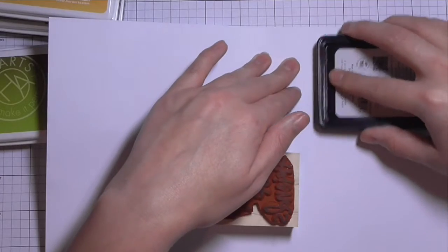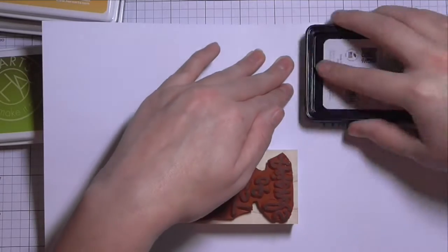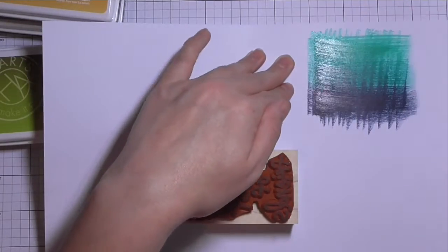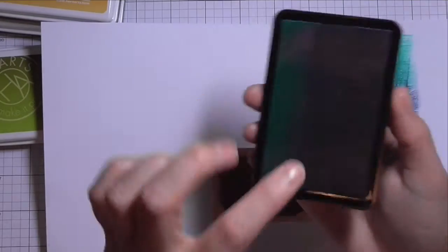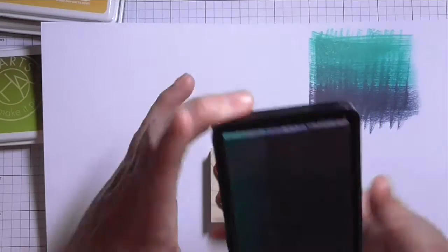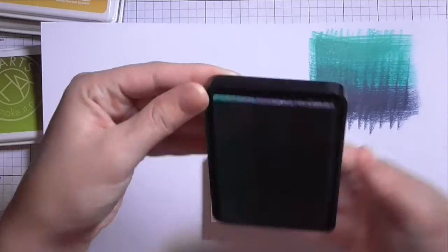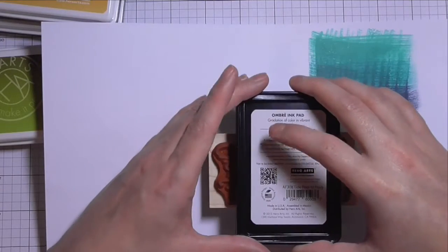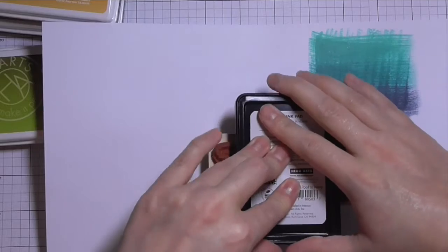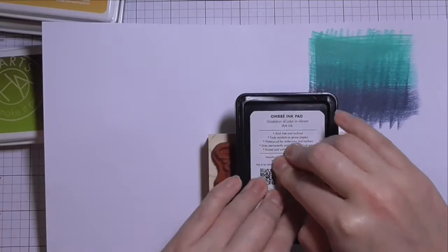So I've got these Ombre ink pads and I'm starting off with one of the blue ink pads. And I'm just swiping that down onto a piece of paper so I can see which of the felt pads is the darkest and which one's the lightest. So I want the darkest to be at the bottom of this sentiment stamp. So I'm just going to press that down quite firmly in the middle there.